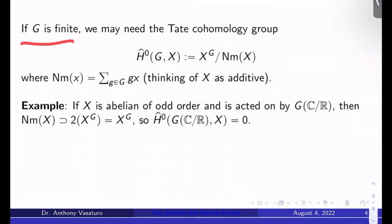Occasionally, like if G is finite, we may not want to work just with H⁰(G,X). We might want to work with what's called the zeroth Tate cohomology group, Ĥ⁰(G,X). It's X^G mod norm(X), where norm(X) is the sum over g in G of all the g·x's. Here we're thinking of X as additive or else this doesn't really make sense. So norm(big X) is just the set of all the norm of little x's.